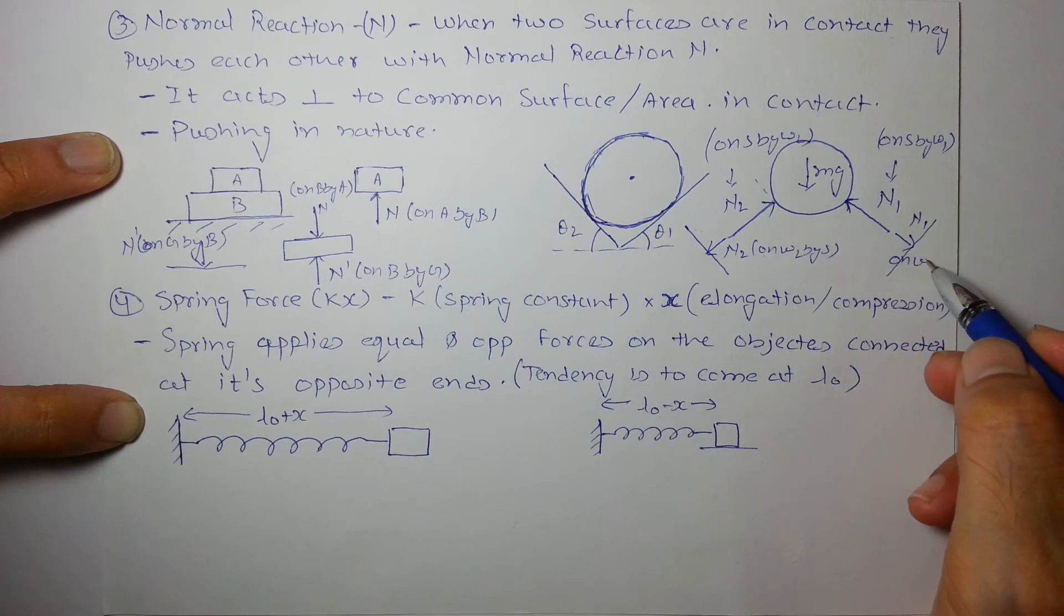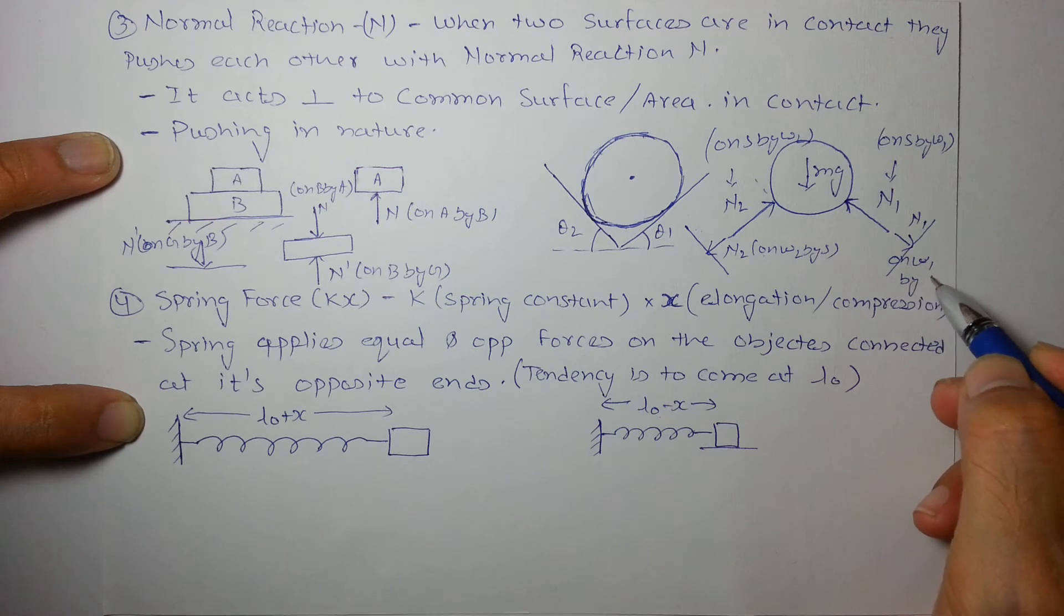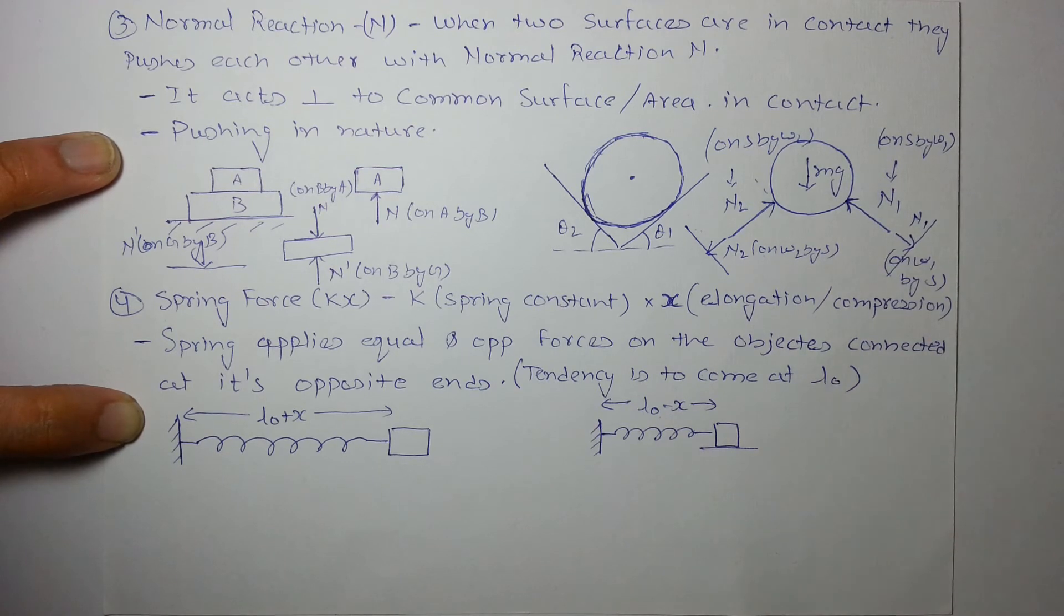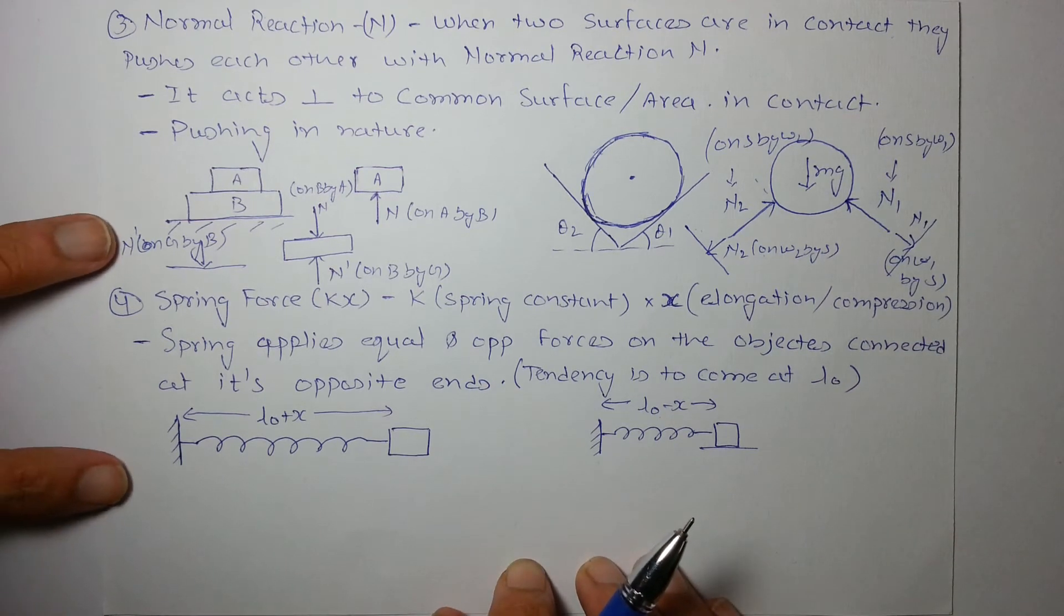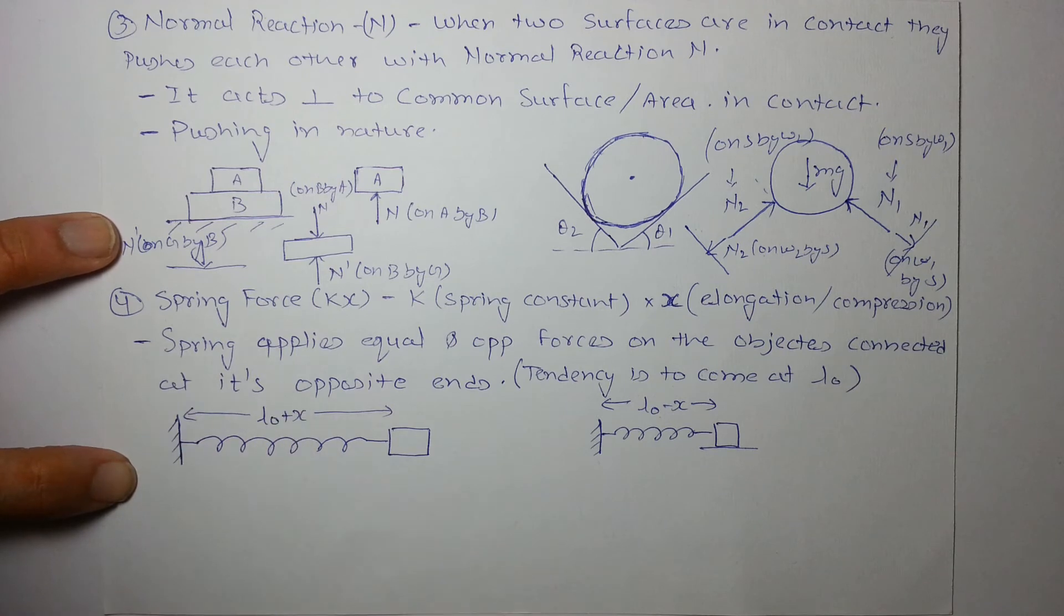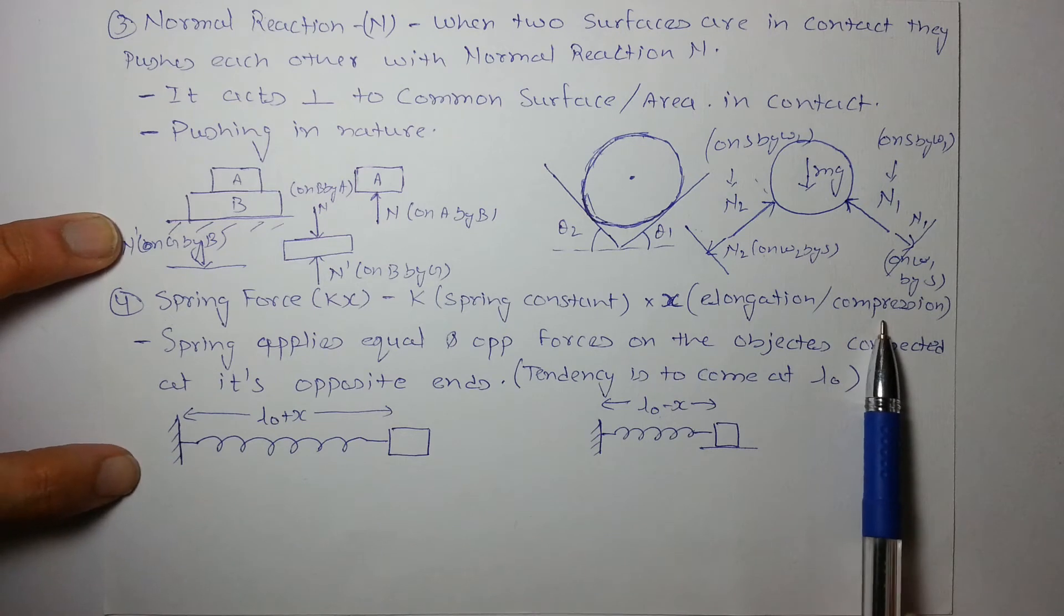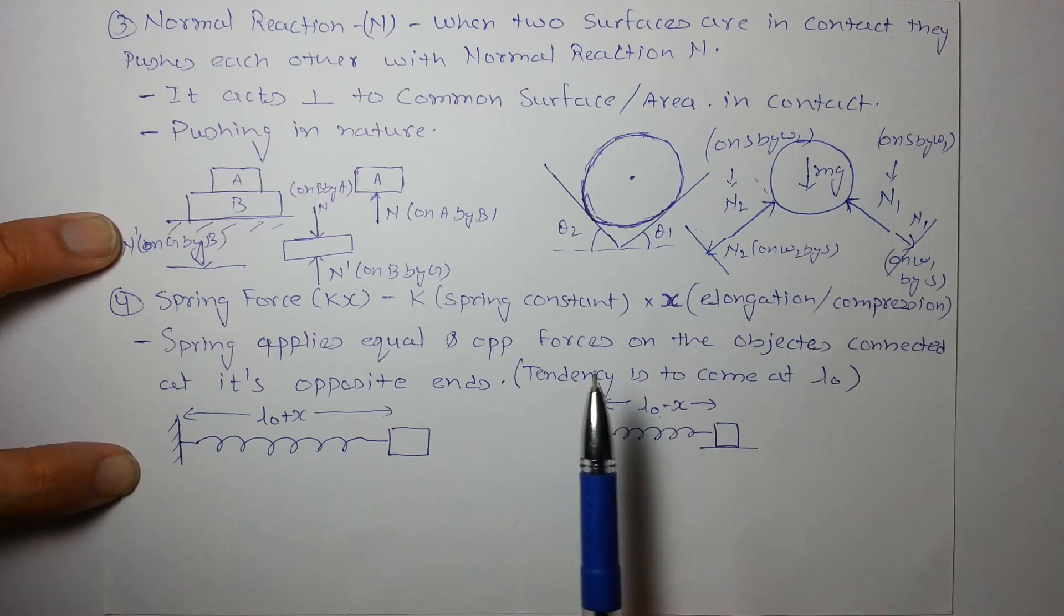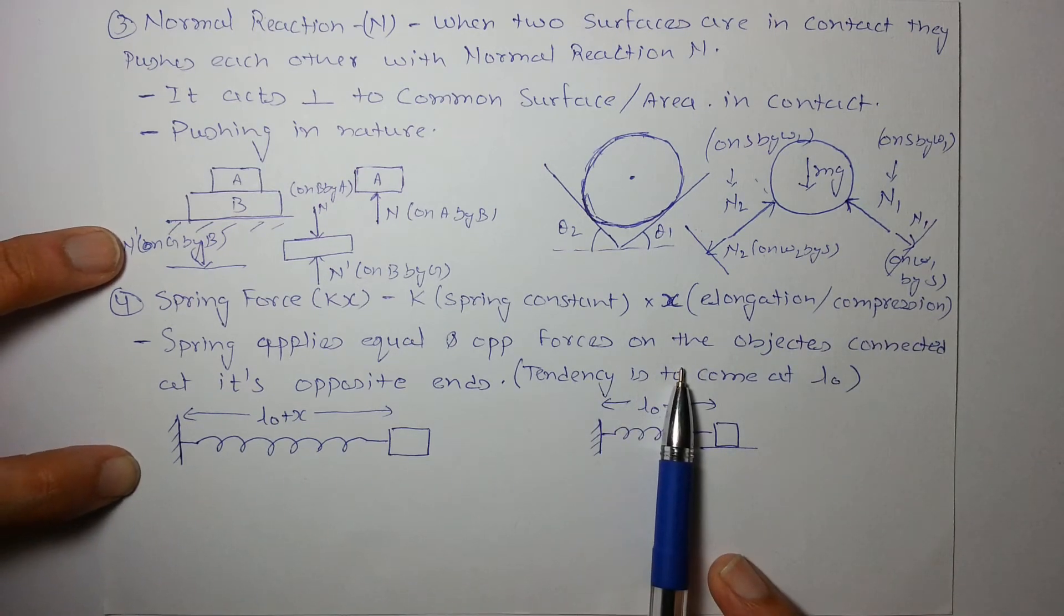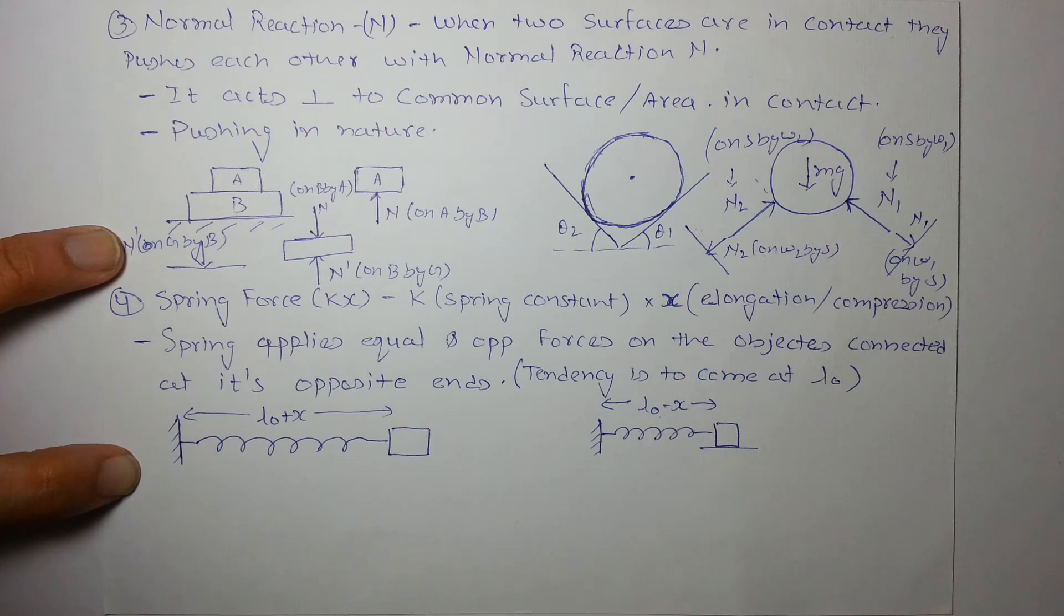And the last important force is spring force. K is the spring constant, X is the elongation or compression in the spring. So naturally, when the spring is at its natural length, it applies no force on the object in contact with it or attached to it.